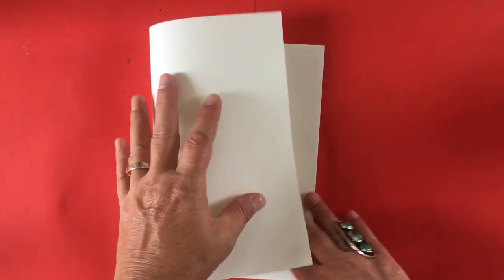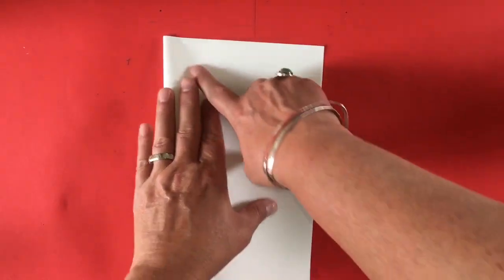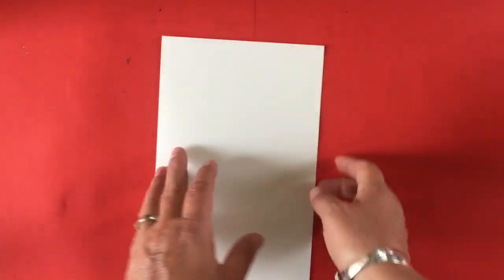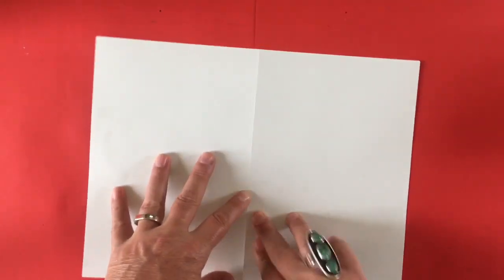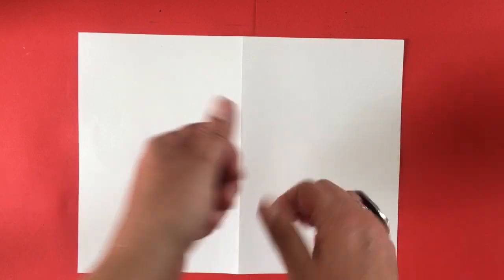The first thing we're going to do is get a piece of blank white paper and fold it in half, matching the corners and pressing down to make a crease down the middle. Flip it over so the crease is right there and we're going to do it horizontally today.